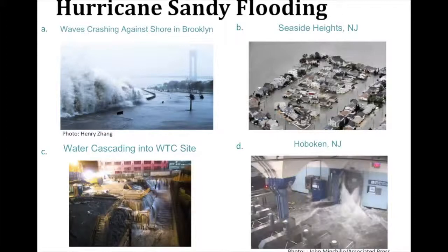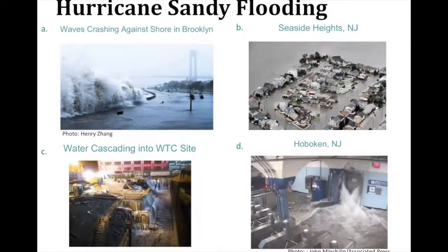In general, sea level rise will exacerbate the effects of these storms because the base ocean level is higher than it would have been formerly — so you have that in addition to whatever storm surge is produced. Here you have Hurricane Sandy, which affected the New Jersey and New York City shoreline. In figure A, you see waves crashing against the seawall in Brooklyn.